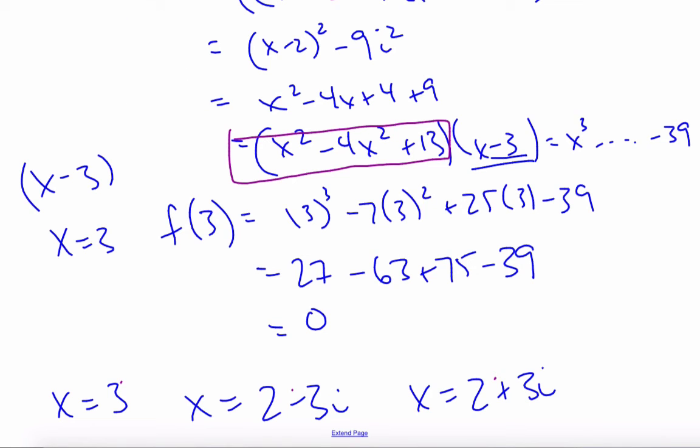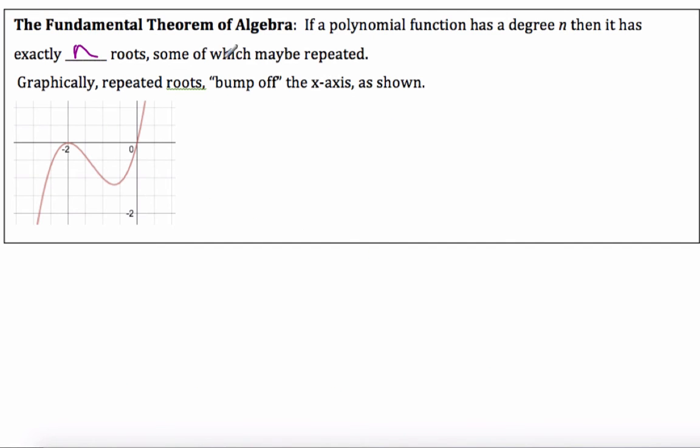If it was to the power of four, it would have four roots. Some are repeated. When you get what's called a repeated root, it bumps off the graph here, it just touches. So if I was going to rewrite this, my roots are -2 and 0.